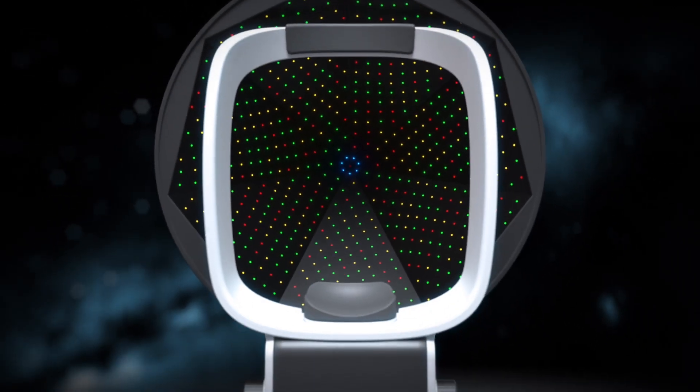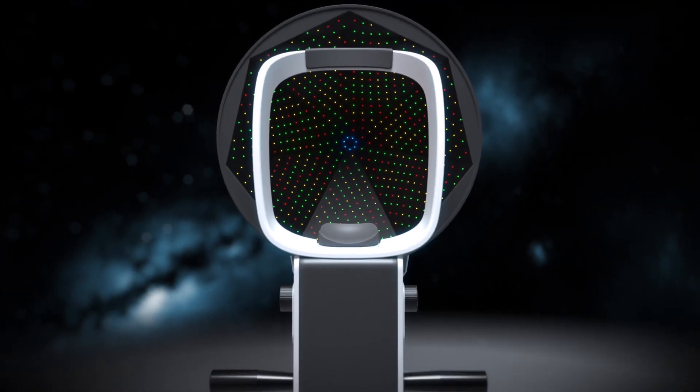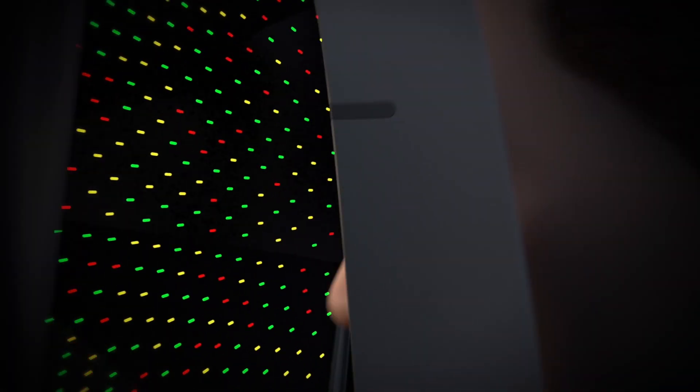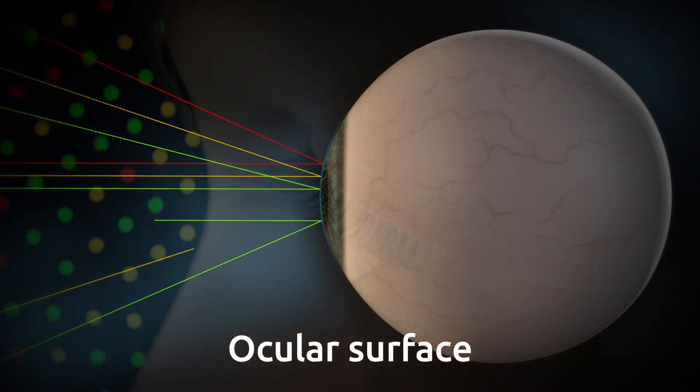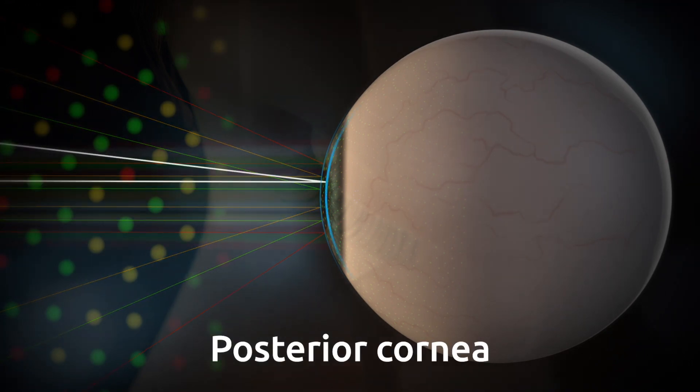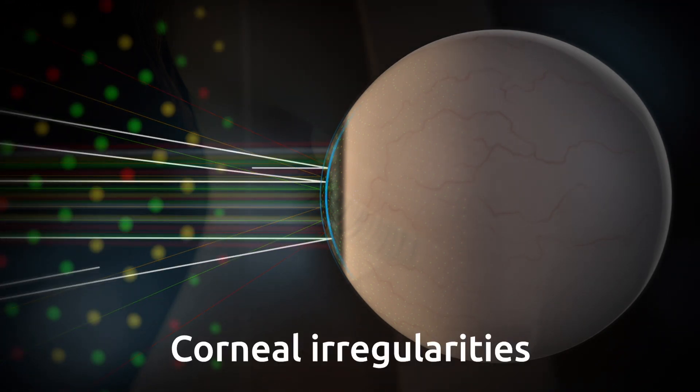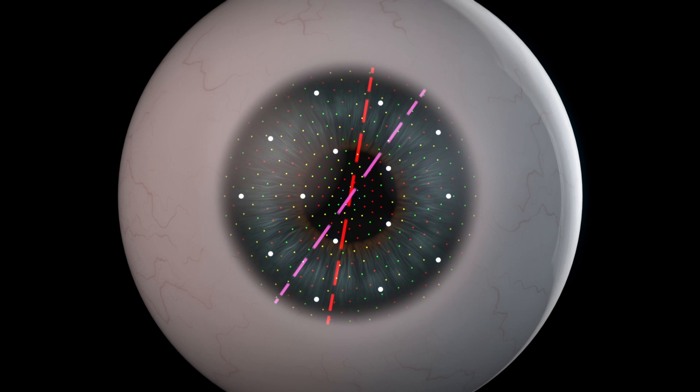Described as the confident game-changer that has transformed practices, the Cassini assesses ocular surface stability, measures the posterior cornea, and detects corneal irregularities with LED topography.